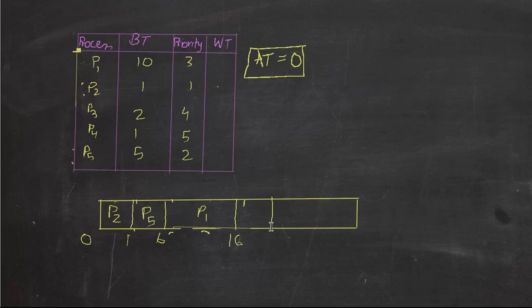Fourthly, we execute p3, p3, the burst term is two, so eighteen, and p4 is the last process that we execute, so p4, the burst term is one, so nineteen.